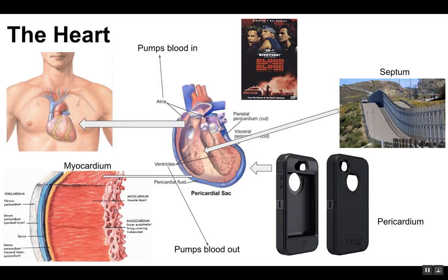You have two chambers in your heart. The upper chamber is called the atrium, and the lower chamber is the ventricle. You have a right and left ventricle and atrium. The ventricle is the lower chamber that pumps blood out of the heart, while the atrium is the upper chamber that receives blood into the heart.